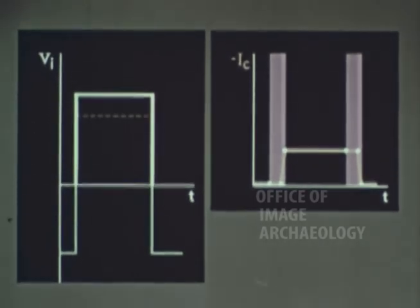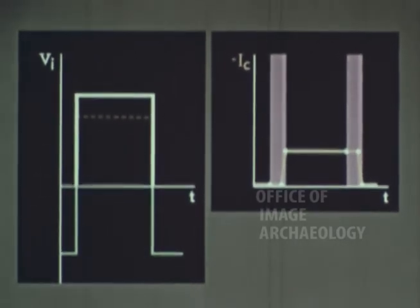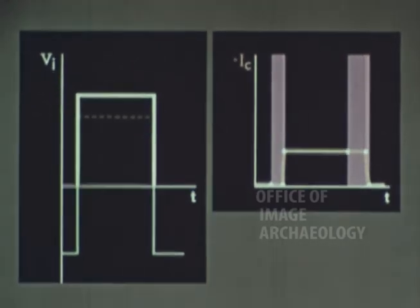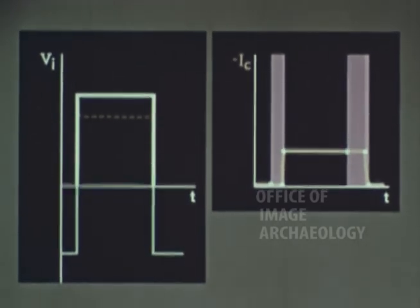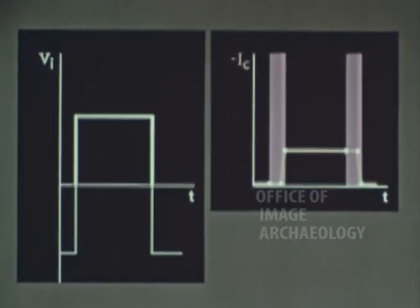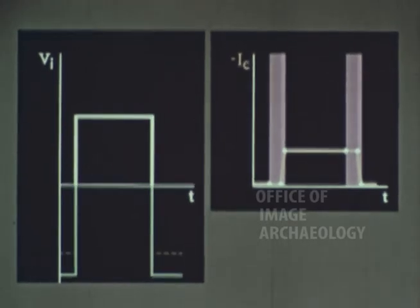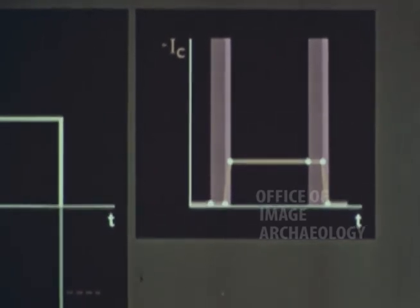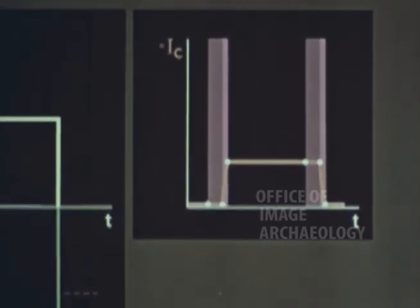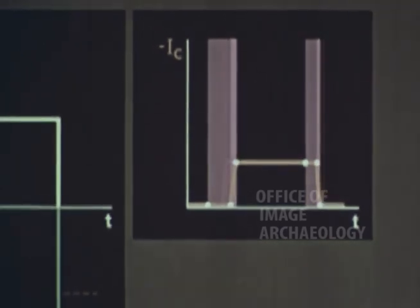To reduce Tr, it is sufficient to increase the saturation voltage. But simultaneously, Ts will increase because the amount of holes stored in the base has also increased. In the same way, to reduce Tf, the transistor must be brought rapidly to cutoff. But in this case, because the emitter-base barrier region has become wider, the delay time Td increases.